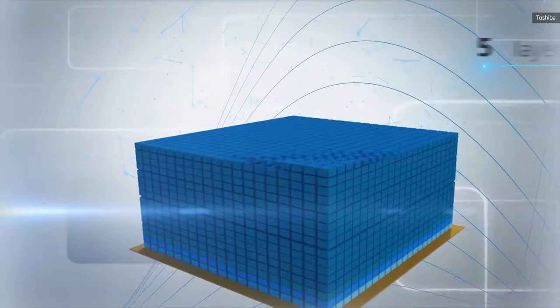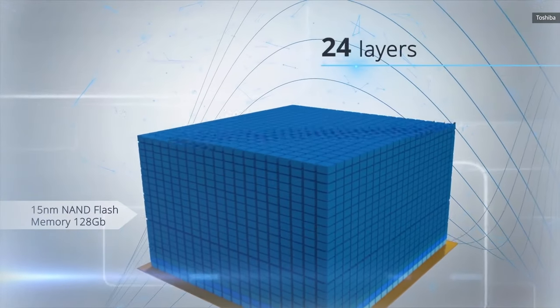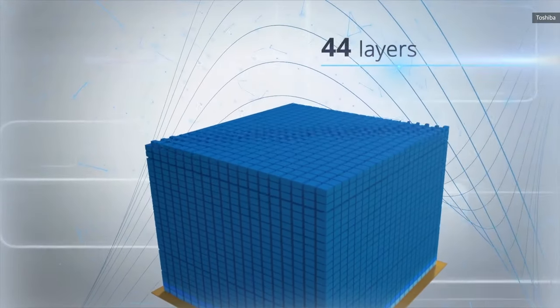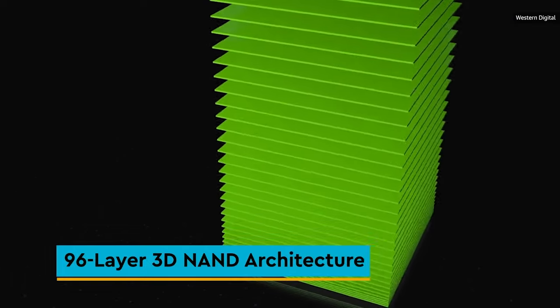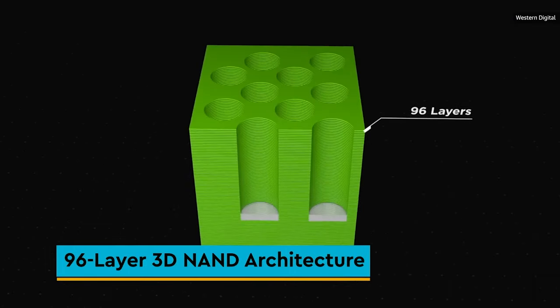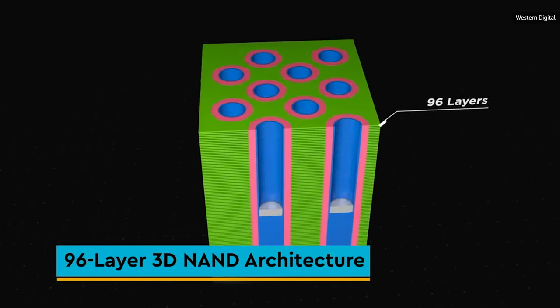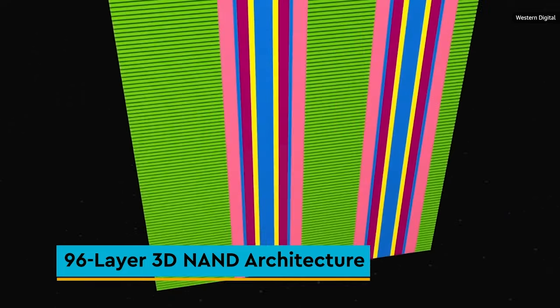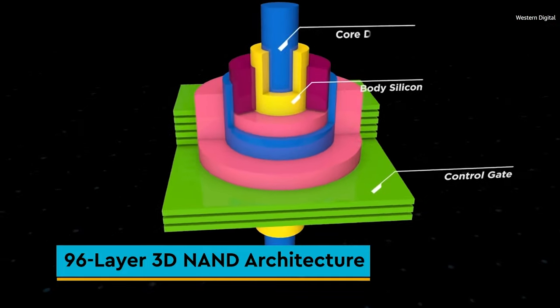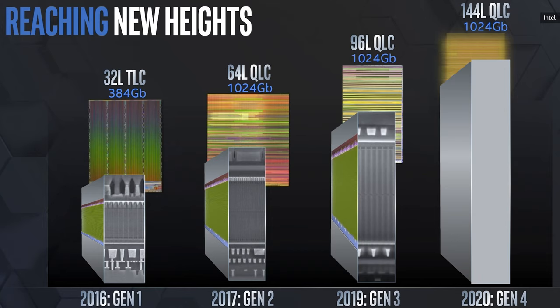SSD capacity is improving in other ways too. 3D NAND — which Samsung insists on calling VNAND — is already the standard in high-capacity drives, and it boosts storage by stacking the flash cells vertically. Current SSDs can have memory chips with as many as 96 layers of flash, and 144-layer flash is expected soon. And as companies refine their QLC designs, that should help prices come down and lead to even bigger drives and maybe even slightly improved performance.